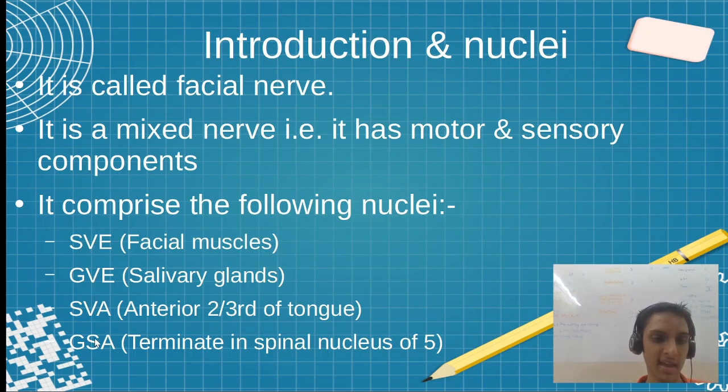SVE supplies facial muscles, GVE supplies salivary glands, SVA supplies anterior two-thirds of tongue, and GSA terminates into SNT5. What is SNT5? A simple mnemonic: spinal nucleus and tract of trigeminal, SNT5.